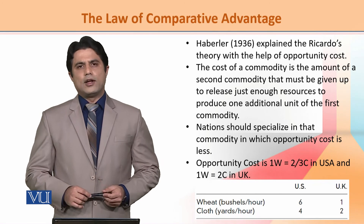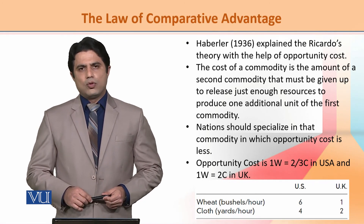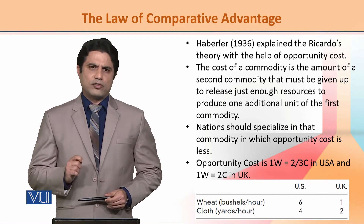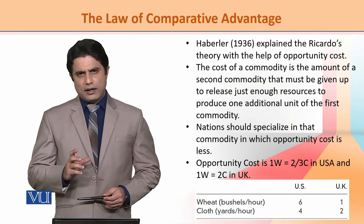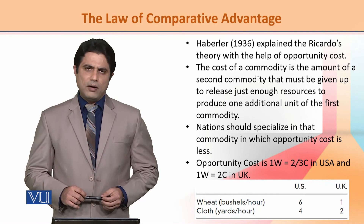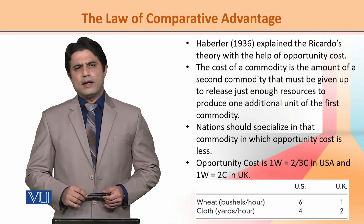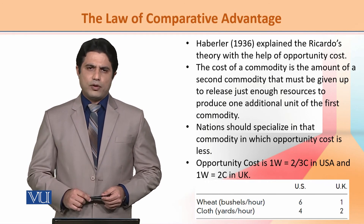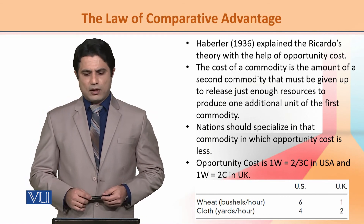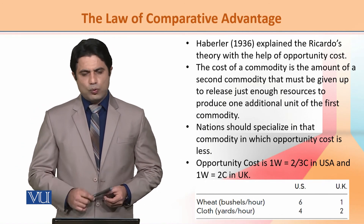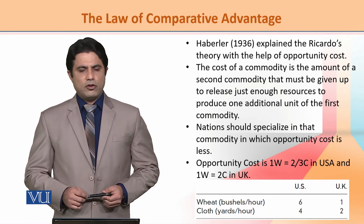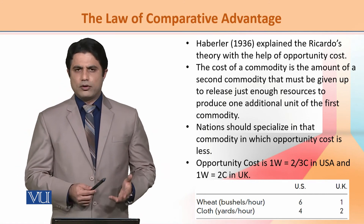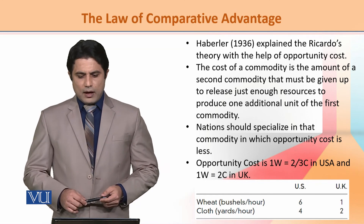Labor is assumed to be a single factor of production. A nation must specialize in that commodity in which the opportunity cost is less. We can explain this opportunity cost concept with an example of two commodities and two nations — USA and UK.